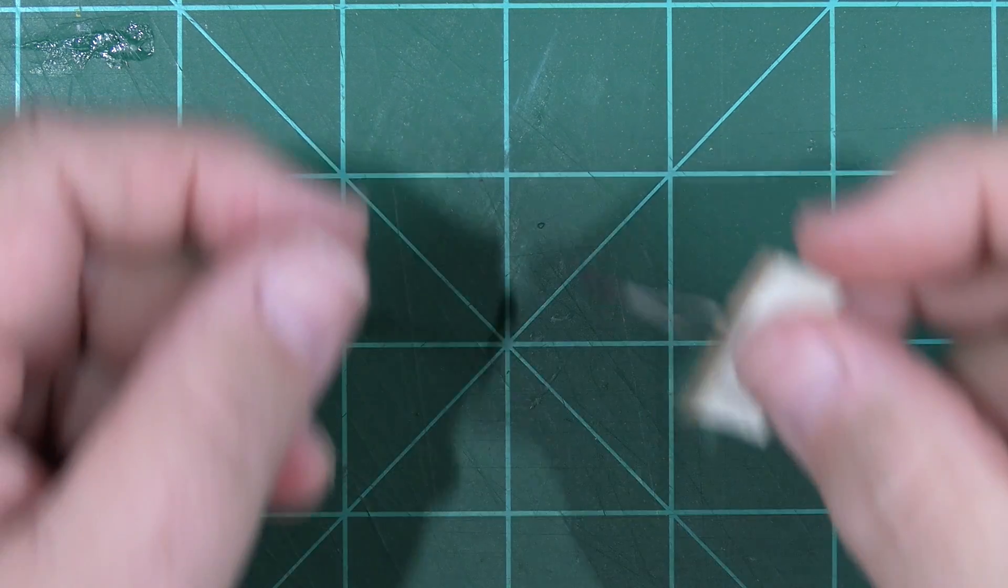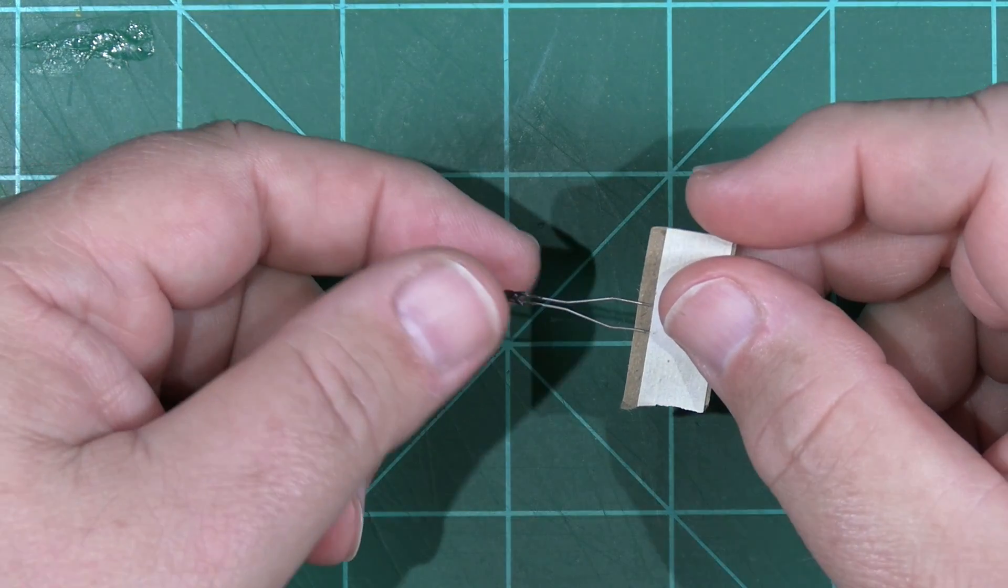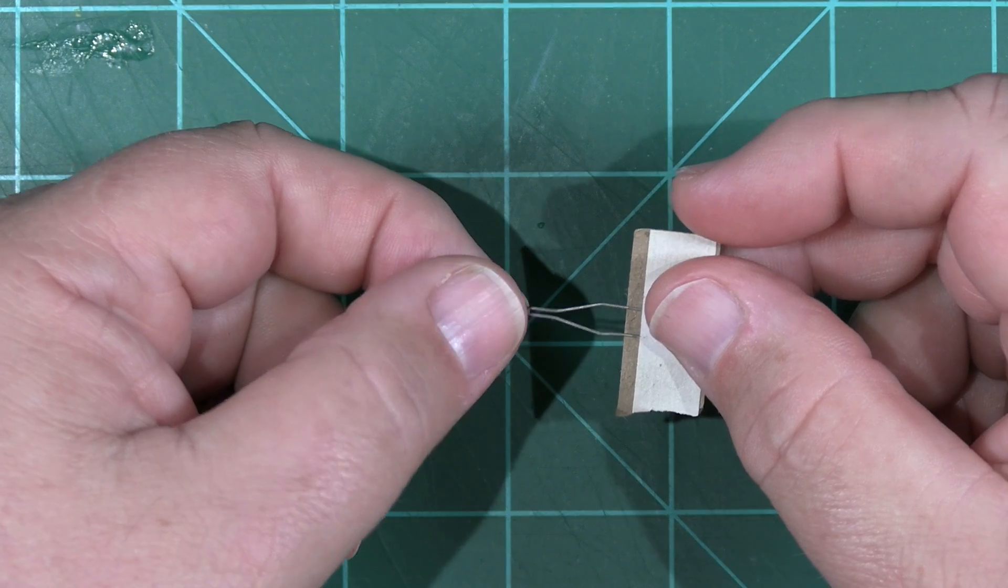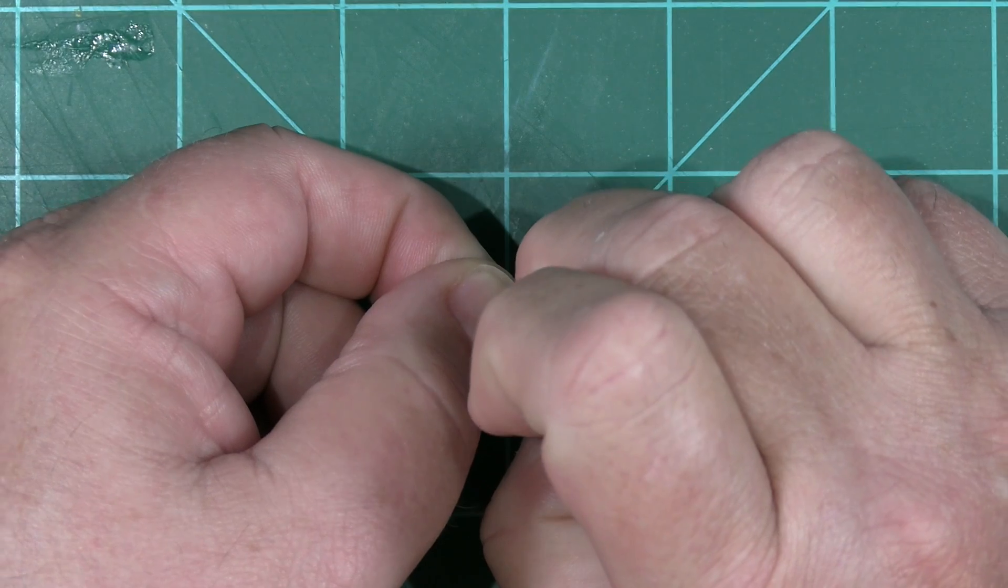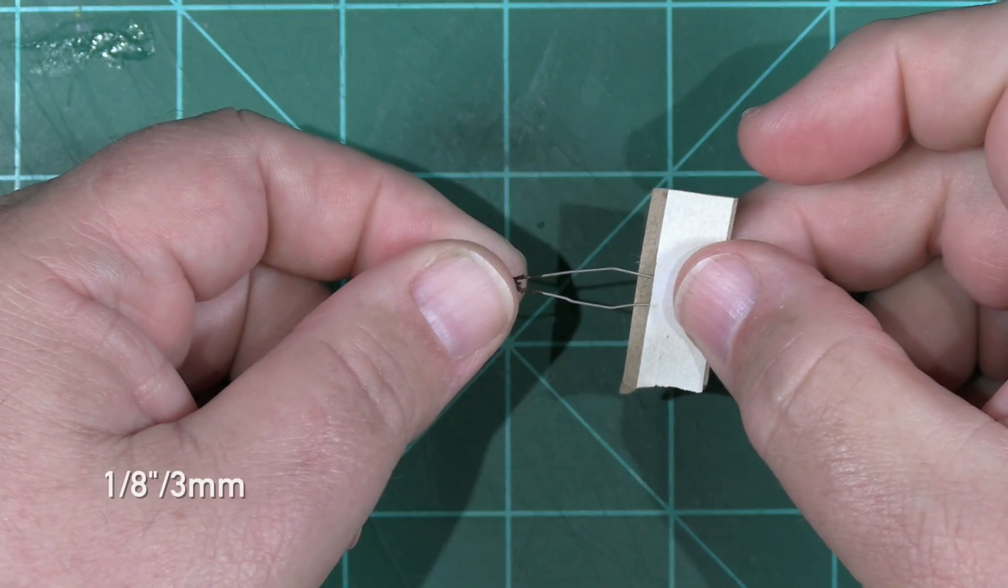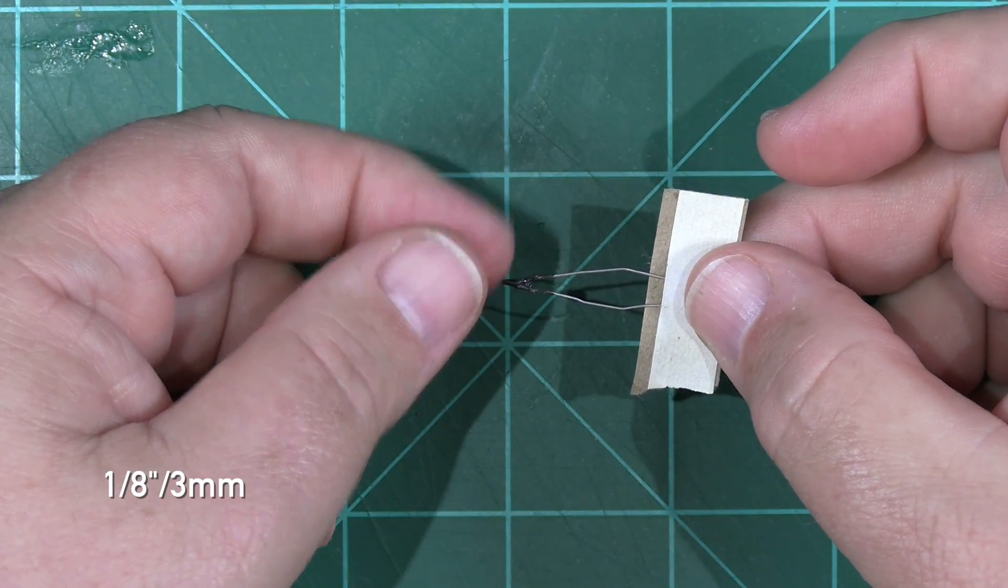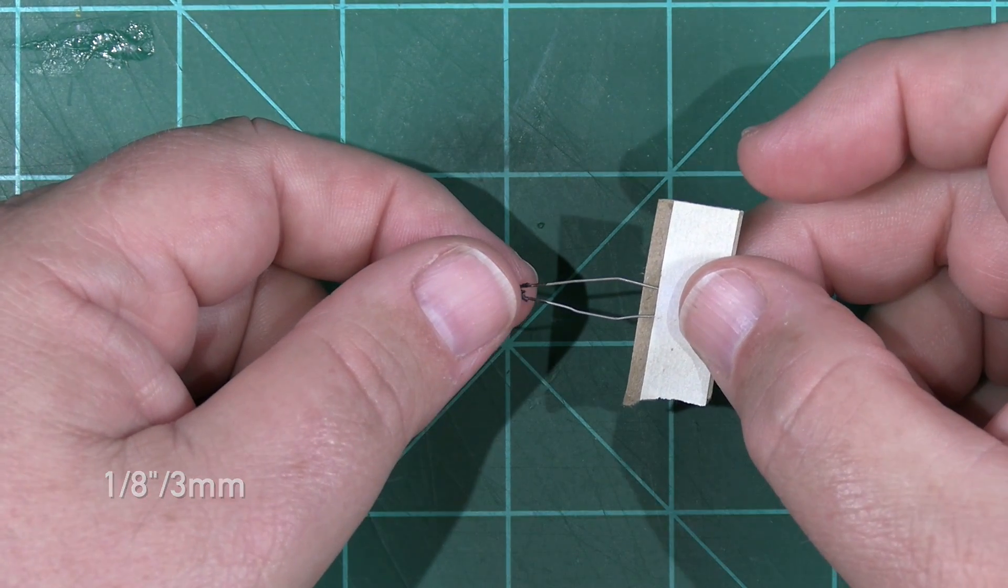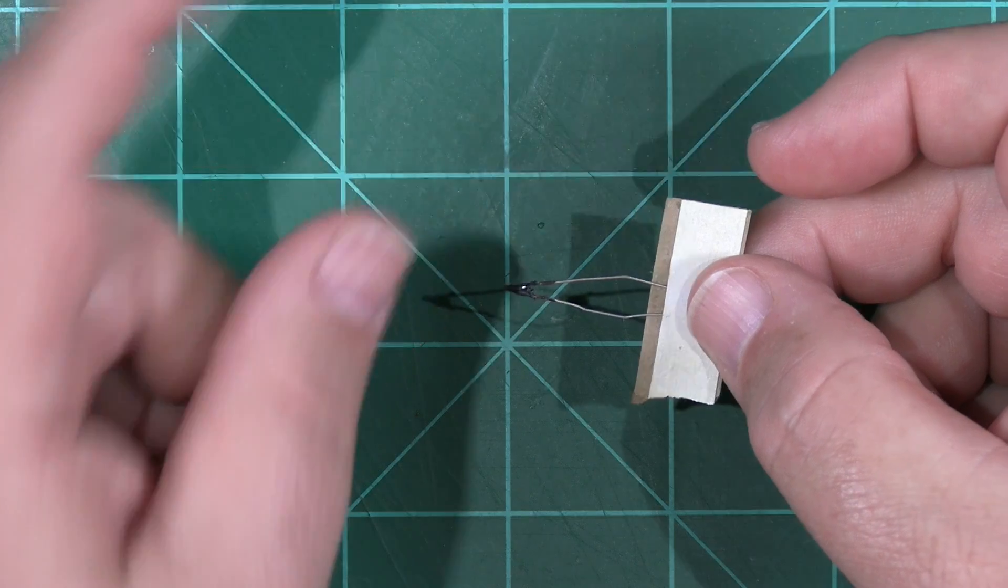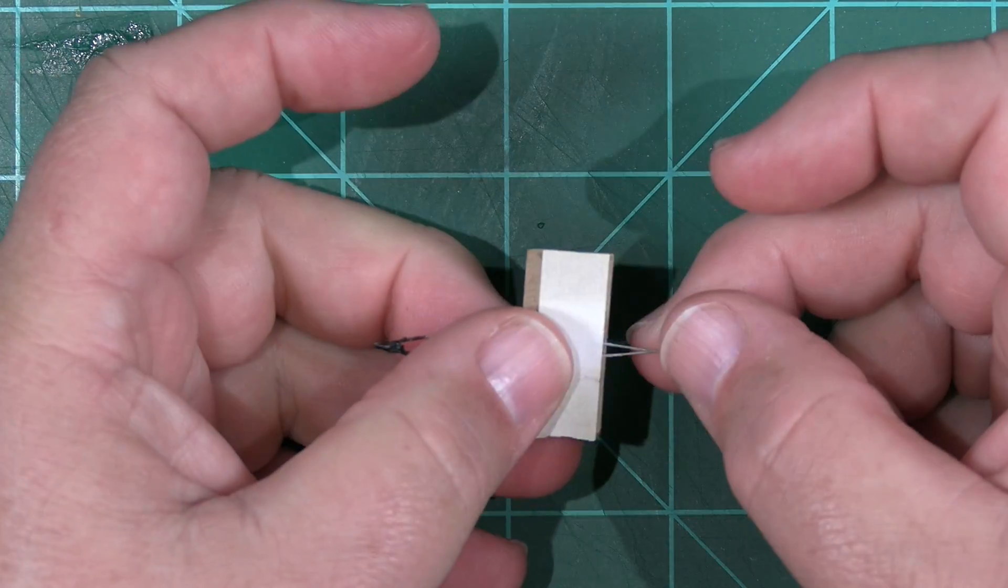So, let's install an igniter. First, hold the igniter carefully by the head, and then gently spread the two conductor leads apart by about an eighth of an inch, or about three millimeters. This helps make sure that the igniter won't short out on itself when installed, which is the number one cause of misfires.